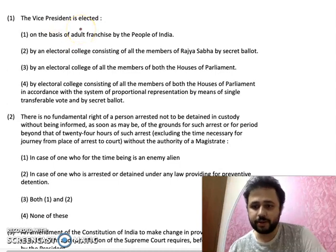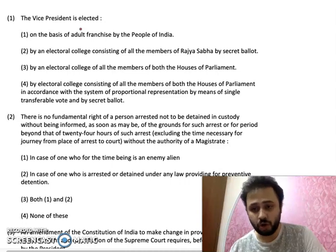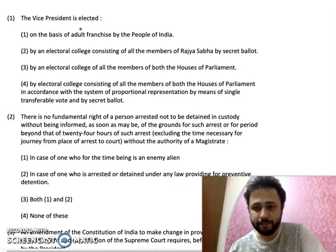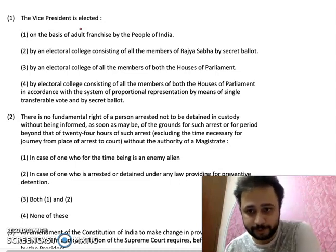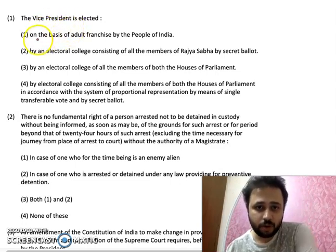Hello friends, this is the fifth video of the MCQ series regarding constitutional law. Today we will discuss 10 MCQs on constitutional law. The first question is: the Vice President is elected — option one: on the basis of adult franchise by the people of India.